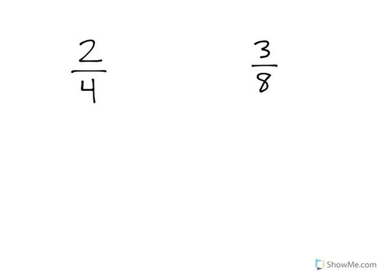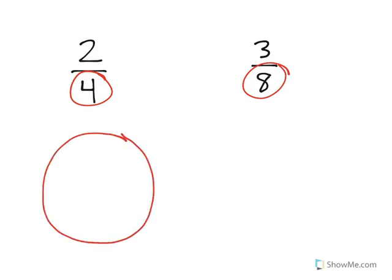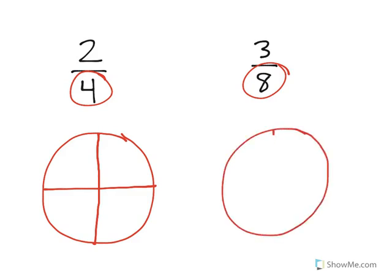And what we're going to do is focus on the denominator, the 4 and the 8. Now remember, the denominator is the number of equal pieces that we split a shape into. So 2 fourths would be split into 4 equal pieces. 3 eighths would be split into 8 equal pieces.